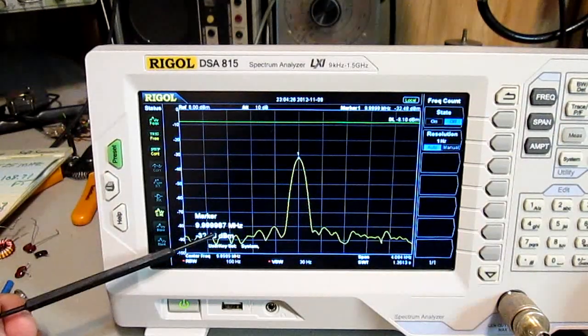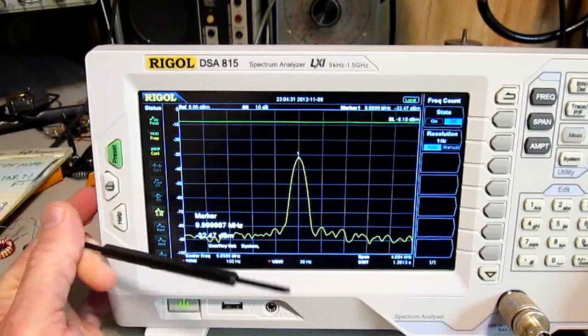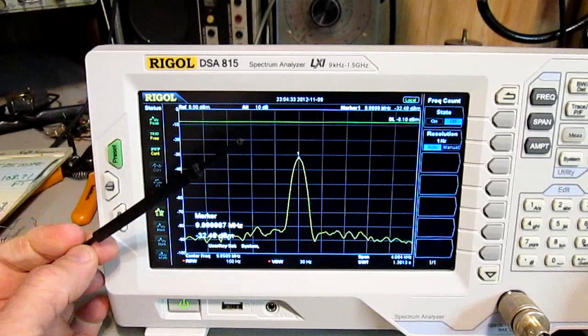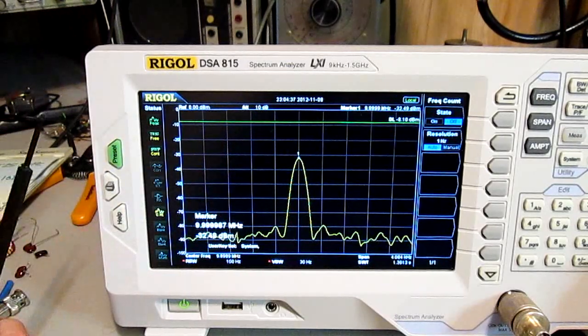So with it off, you get the marker frequency down here, 9.999. And if you look up here, it says marker 1, 9.999. But they match. If I adjust this one, that one changes with it.